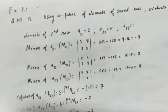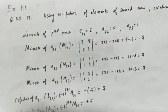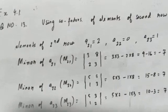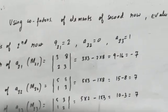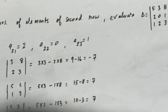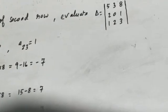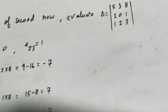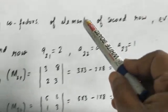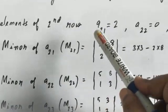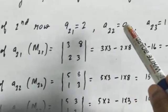So you have learned how to find a minor and the cofactor. Using the concept of cofactors and minors we are going to solve exercise 4.1, question number 13: using cofactors of elements of the second row, find the value of the determinant [5, 3, 8; 2, 0, 1; 1, 2, 3]. They have asked us to use the elements of the second row, which are 2, 0, and 1. So a₂₁ = 2, a₂₂ = 0, and a₂₃ = 1.